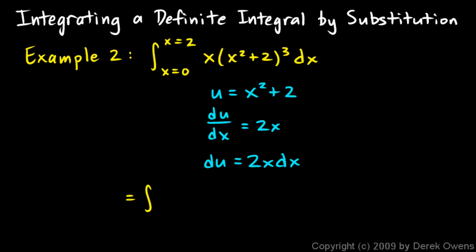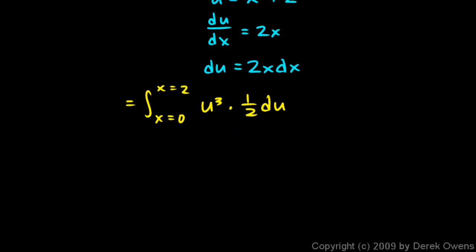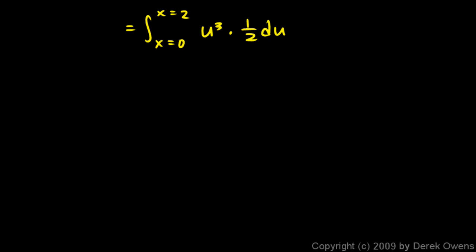The original integral is the integral from x = 0 to x = 2 of u³ times 1/2 du. And we can integrate that. We'll bring the 1/2 out front. And then we have the integral of u³, which is u⁴/4. And we're evaluating this from x = 0 to x = 2.